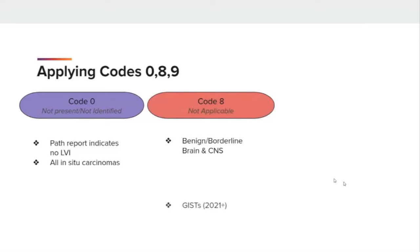Code 8, or not applicable: Coding instructions indicate to apply code 8 for benign, brain, and CNS tumors, gastrointestinal stromal tumors (GIST), and per heme and lymphoma histologies. STORE page 148 contains a list of schema IDs that must be coded to 8, not applicable. Code 8 should also be used when your standard setter does not require this item and the state and central registry are not collecting it.